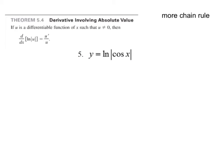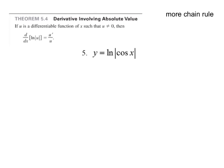What happens if we have the absolute value? The derivative of the natural log of the absolute value of u is just the derivative over u. It's the same thing. Here it looks like we've got more chain rule. So y prime is going to be 1 over cosine x times the derivative of cosine, which is negative sine x.